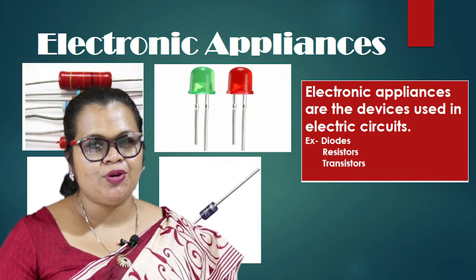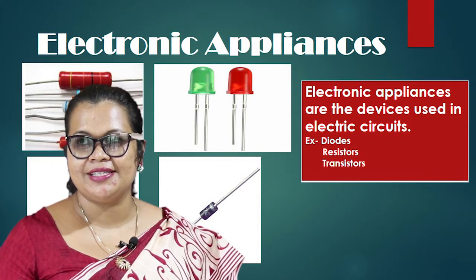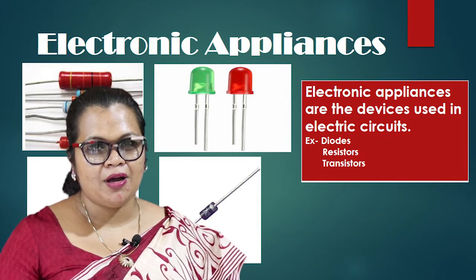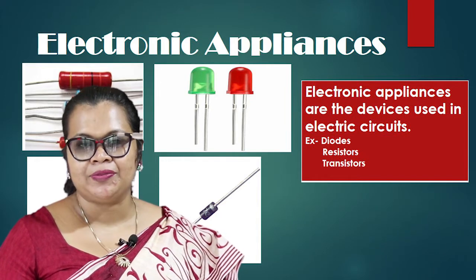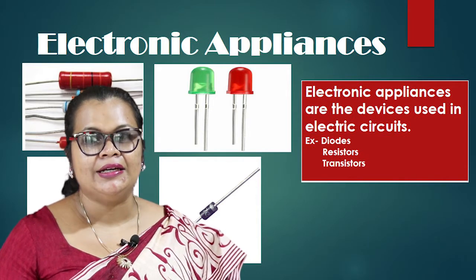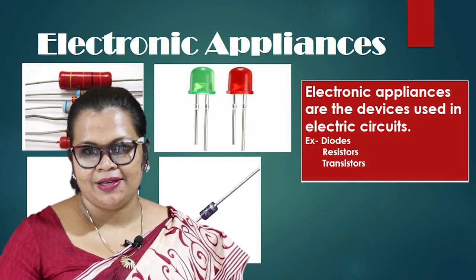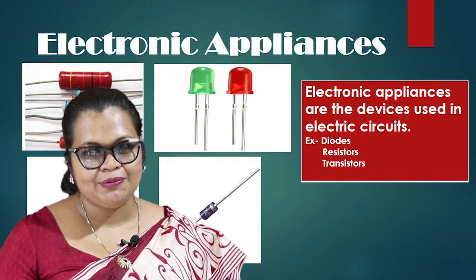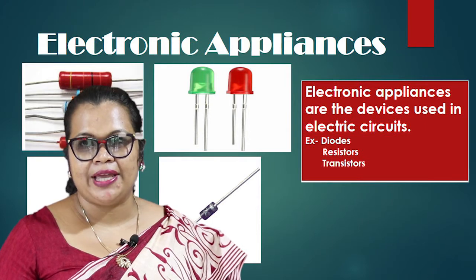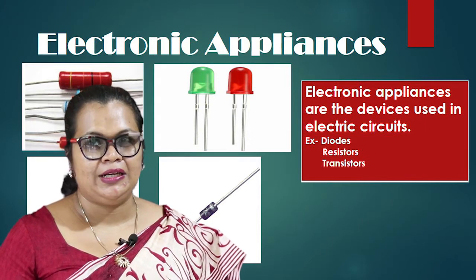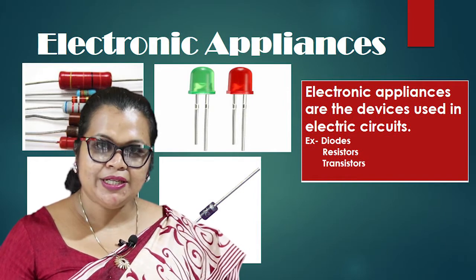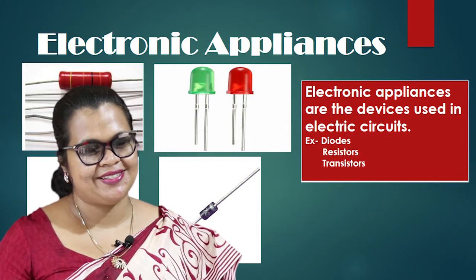You have learned some of the electronic accessories through WhatsApp and Zoom. Some of them are diodes. There are two types of diodes: light emitting diodes and rectifier diodes. You have also learned about some types of resistors, for example LDR — light dependent resistors — permanent resistors and variable resistors.